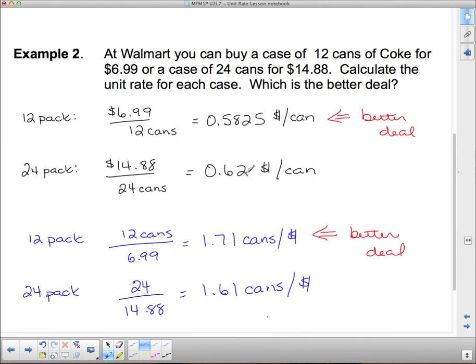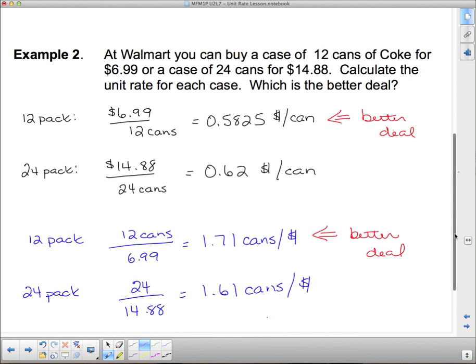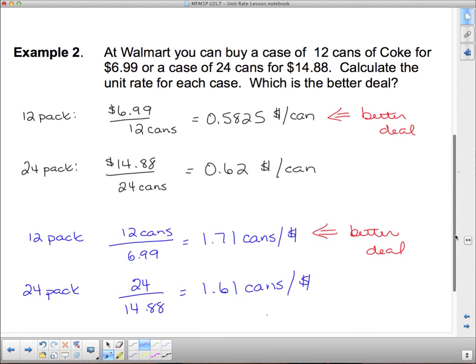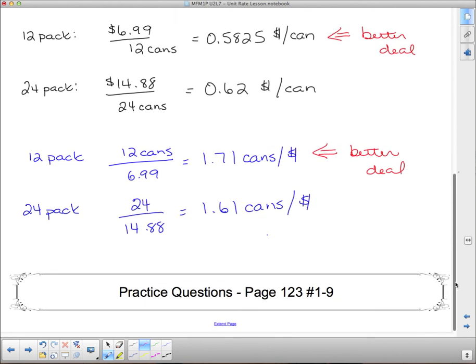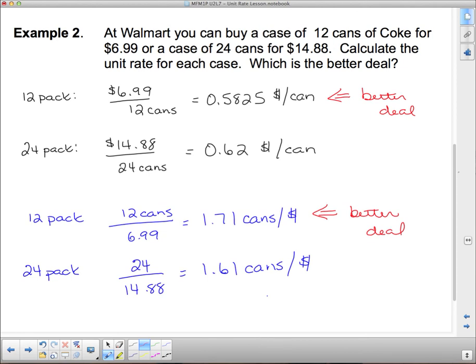Because we want more things for our one dollar. So, this represents the better deal, the same as it did before. It's the same can, but up here, we were looking for the smallest number. And here, we're looking for the bigger number because we want more for our money. And up here, we want less money for one can. So, just be careful when you're dividing that you actually think about what that number represents when you're doing it. And that's it for this lesson.